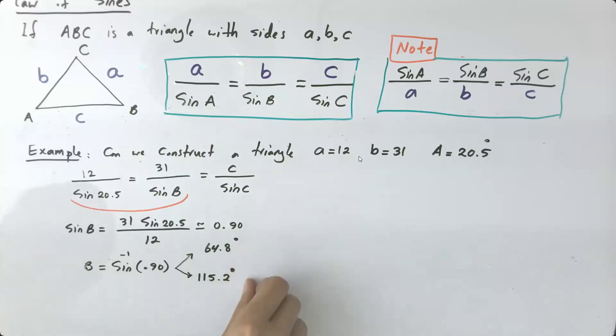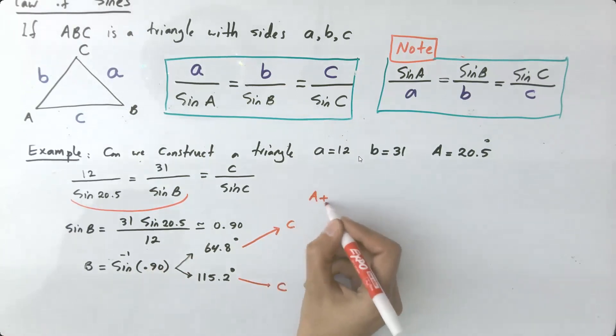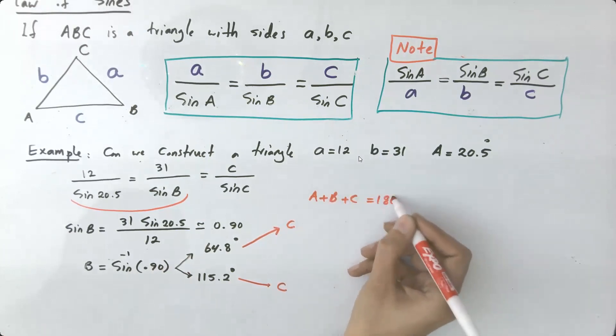We have two possible angles. Well, for each one of these, we have to do the calculations. Very good. So if your angle B is 64.8 degrees, you can find a C angle. If your B is 115.2 degrees, you have another C. Why is that? Because A plus B plus C is equal to 180 degrees. So if B is different each time, you're going to get different C values.